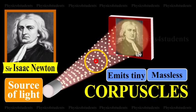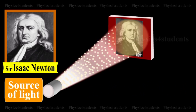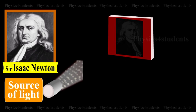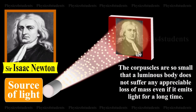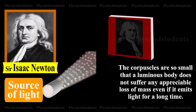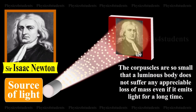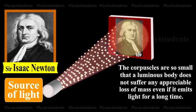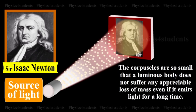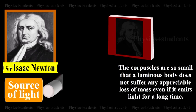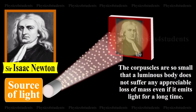They travel in straight lines in a homogeneous medium in all directions with the speed of light. The corpuscles are so small that a luminous body does not suffer any appreciable loss of mass even if it emits light for a long time.